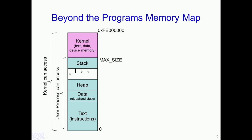Typically, any user program could access any part of the lower region — the green region. There would not be any problem to actually read data from any of these sections or even write data to parts of these sections. However, the process cannot access any data present in the kernel memory, that is beyond the max size limit. However, the kernel or the operating system, which is executing from this upper region, can access data from any part of the region — both the kernel region as well as the user space region.